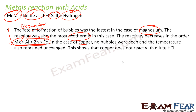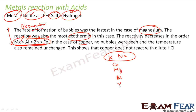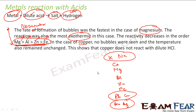So by now, the reactivity series we know includes potassium and sodium — we do not know which one is more reactive. Then we have calcium and magnesium — we know which one is more reactive. Then we have aluminium, zinc, and iron. And then we have lead and copper — we do not know which is more reactive. Then we have gold and silver — we do not know which is more reactive. We need to find which is more reactive within each of these groups. When we react with acid, we found this pattern.